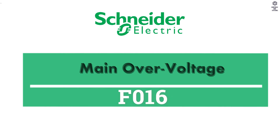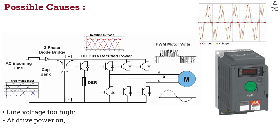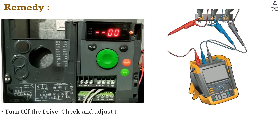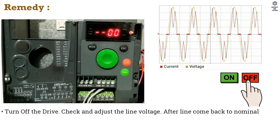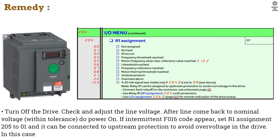F016 Main Over Voltage. Possible Causes: Line Voltage Too High. At Drive Power On, supply is 10% over the Maximum Acceptable Voltage Level. At Power with No Run Command, 20% over Maximal Line Supply. Disturbed Main Supply. Remedy: Turn Off the Drive. Check and Adjust the Line Voltage. After Line comes back to Nominal Voltage with intolerance, do Power On. If Intermittent F016 Code appears, set R1 Assignment 205 to 01 — it can be connected to upstream protection to avoid over voltage in the drive. In this case L01 can be used for other drive status.